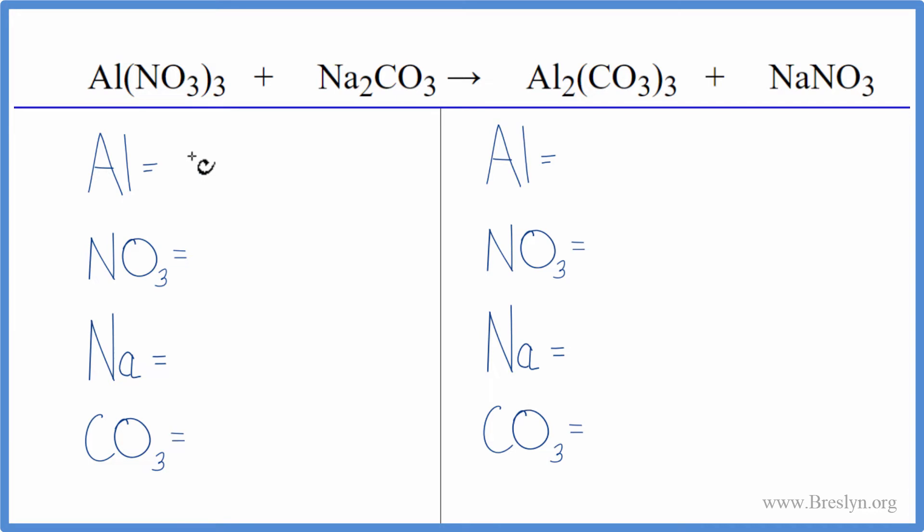So we have one aluminum, and then nitrate, we have it here, this NO3, it stays together in the reaction, and we have it here again. So we can say we have one nitrate, and the three times the one gives us a total of three nitrate ions.